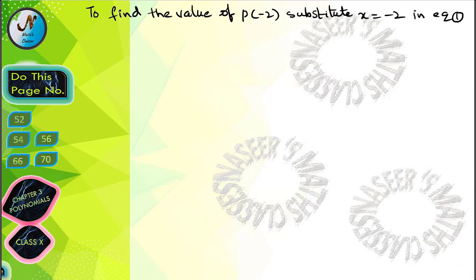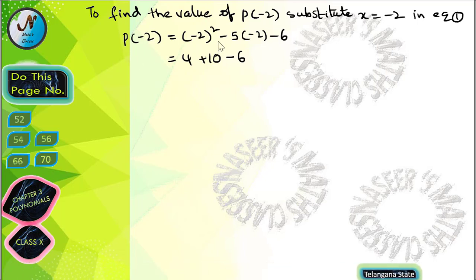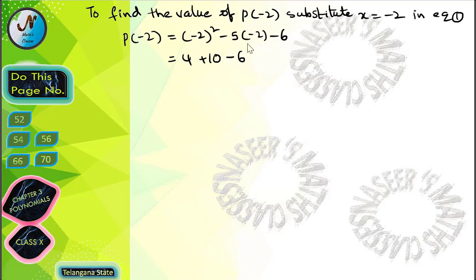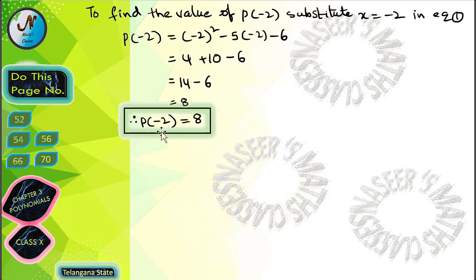To find the value of p(-2), substitute x is equal to minus 2 in equation 1. After substitution, we get p(-2) is equal to minus 2 whole square minus 5 into minus 2 minus 6. Here, minus 2 whole square is plus 4, minus 5 into minus 2 is plus 10, and minus 6 remains. After simplification, we get 14 minus 6, which is 8. Therefore, p(-2) is equal to 8.